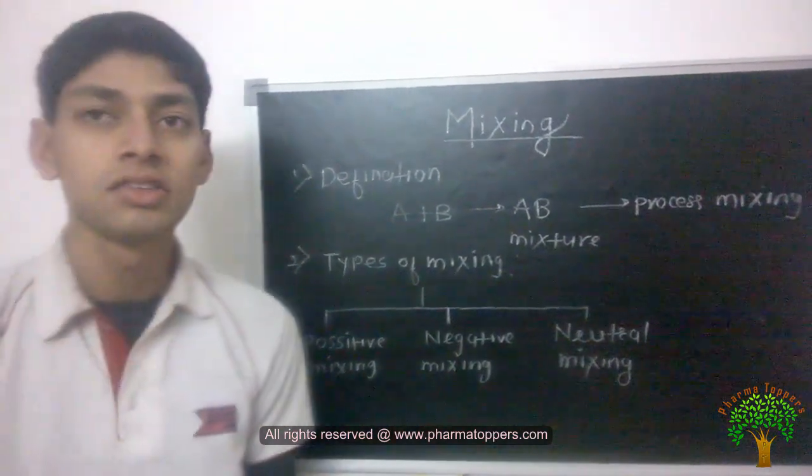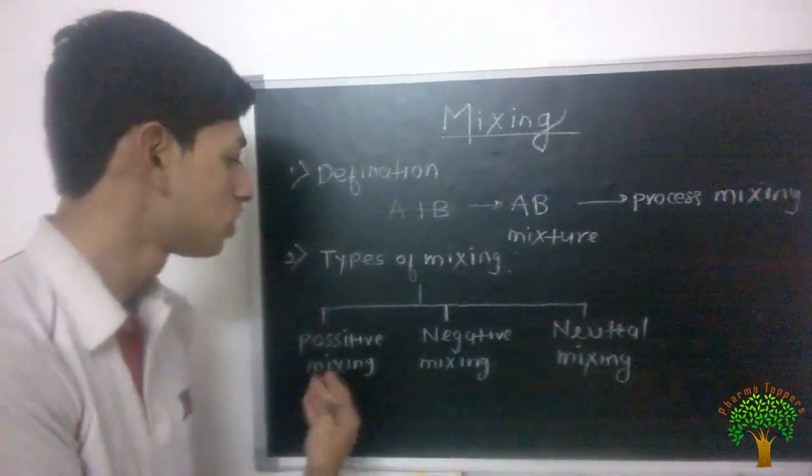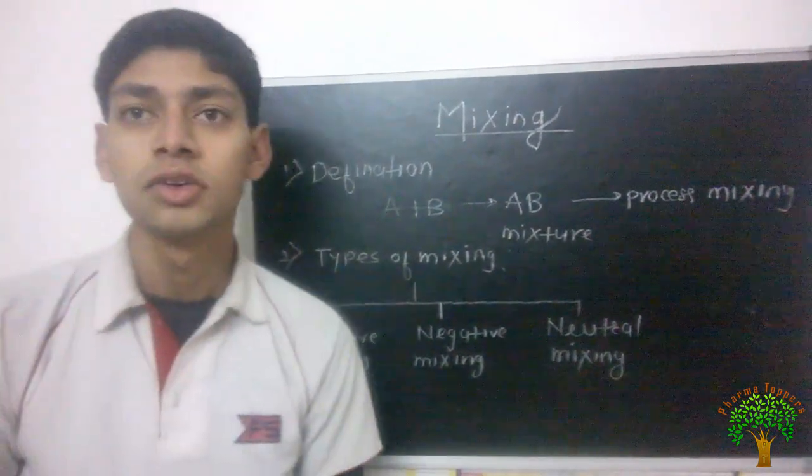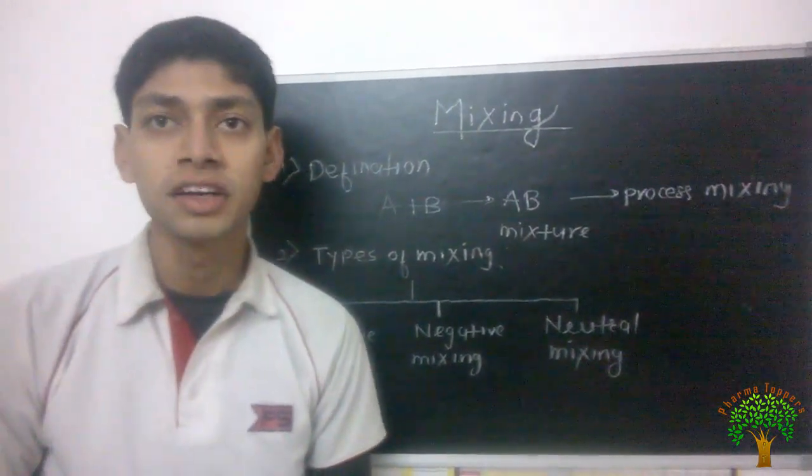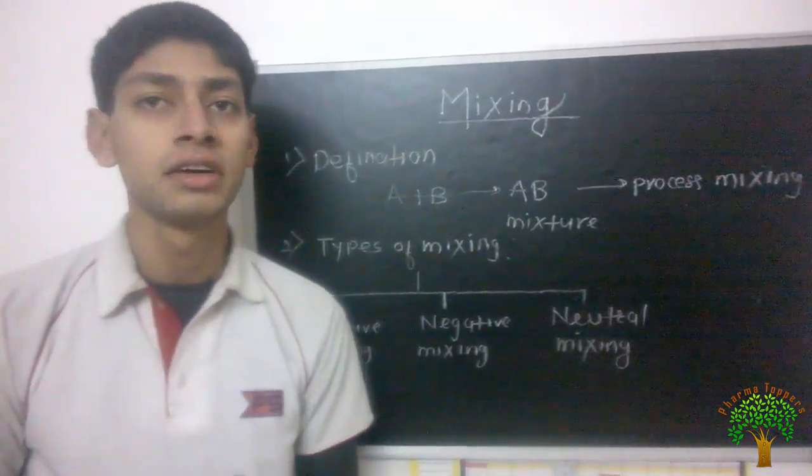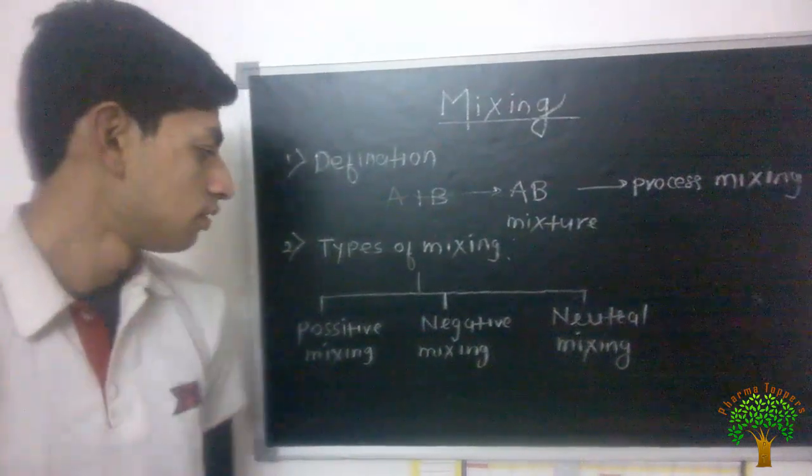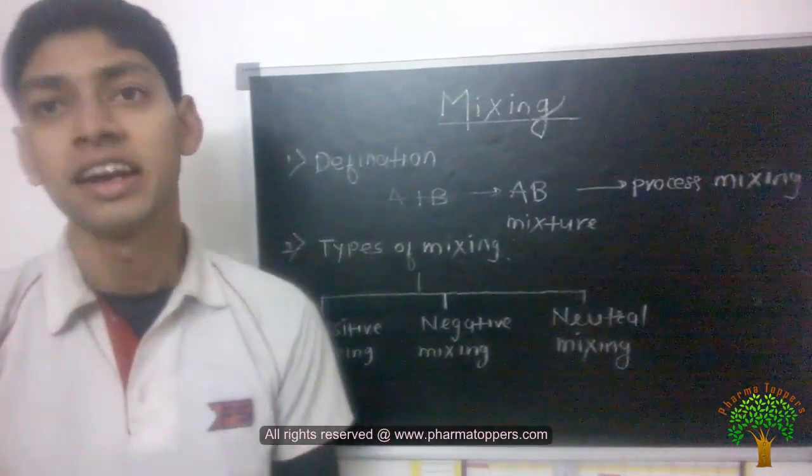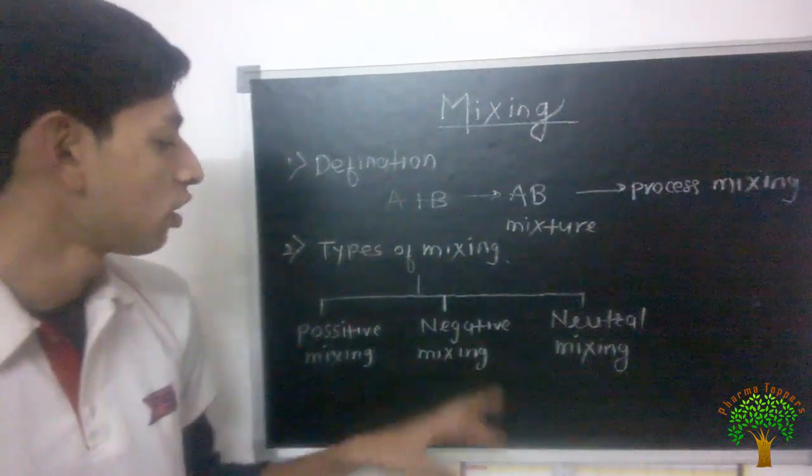Now negative mixing is opposite to positive mixing. It requires higher energy for the mixing and it is reversible in either like suspensions and emulsions. In long time, it will get separated due to the lesser energy, and it is called negative mixing.